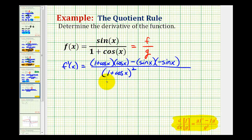Now that we've applied the quotient rule, we have our derivative, but now we have to simplify this as much as possible. So we'll leave the denominator the same, here we'll distribute cosine x, so we'll have cosine x plus cosine squared x.